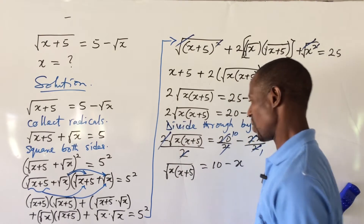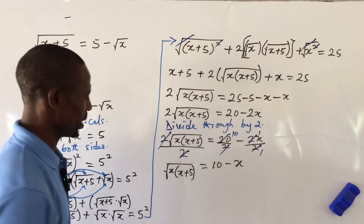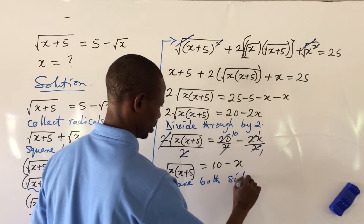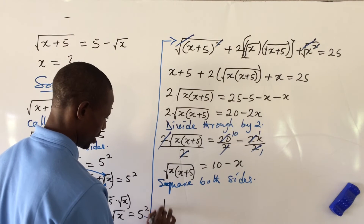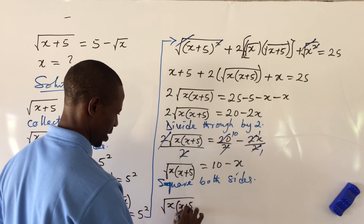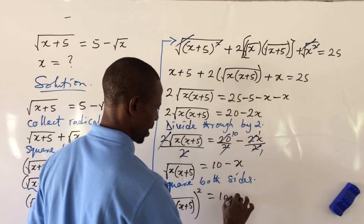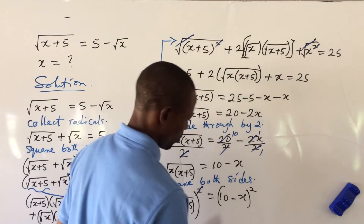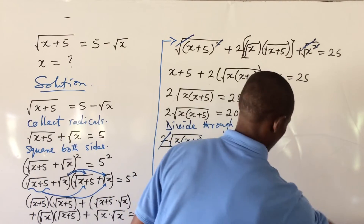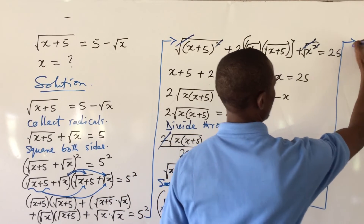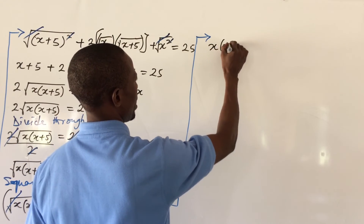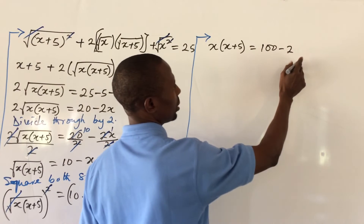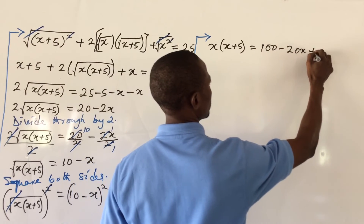From here, we square both sides again to eliminate this square root sign. If we do that we're going to have x times (x plus 5) squared equal to (10 minus x) squared. The square root takes care of the square, so on the left hand side we have x times (x plus 5), and opening the right hand side gives us 100 minus 20x plus x squared.